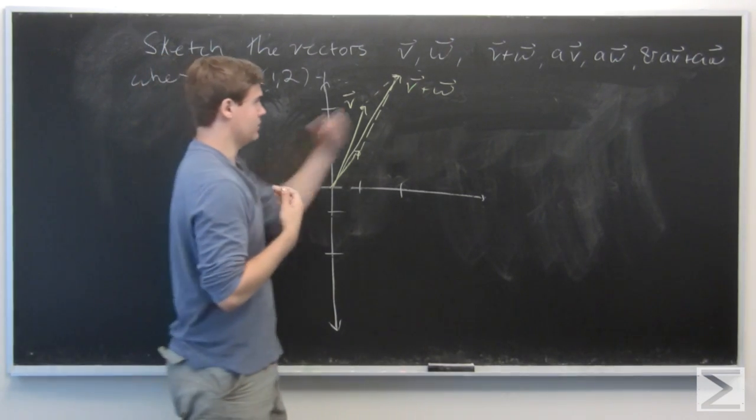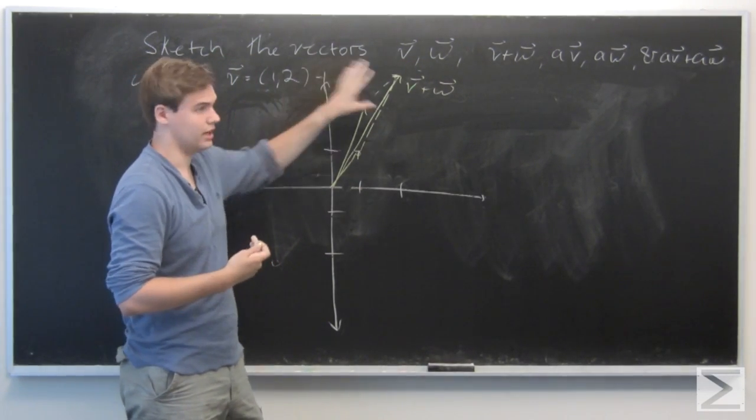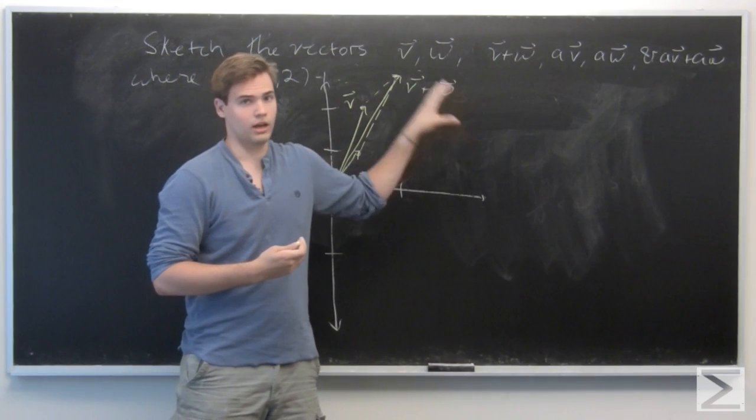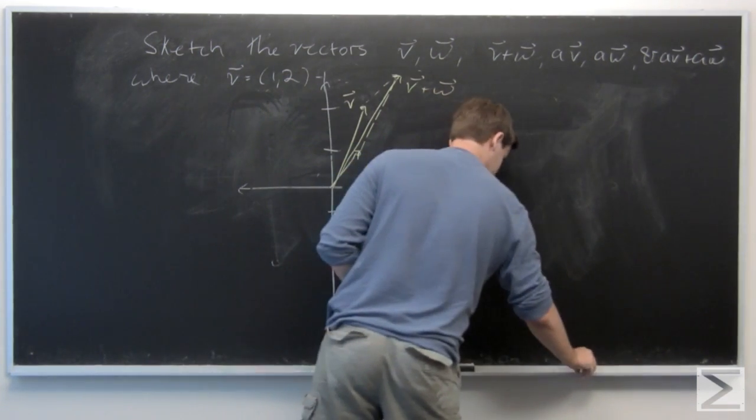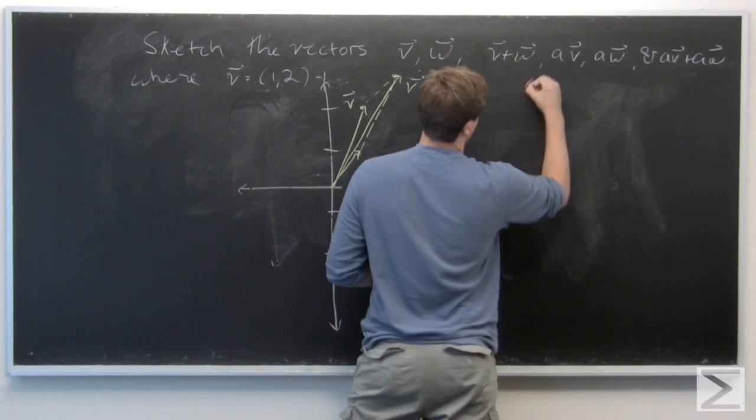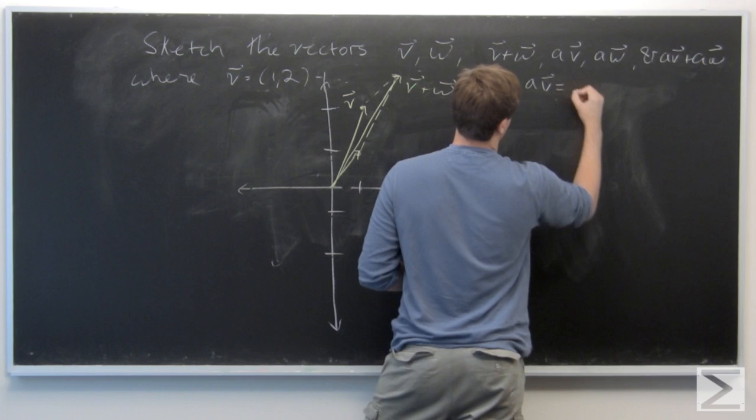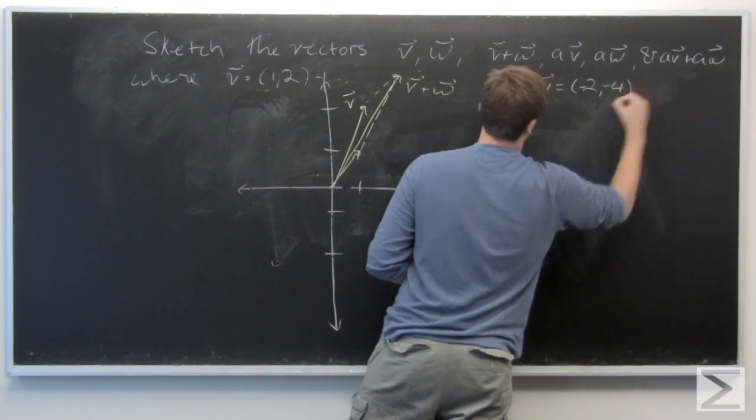And so now we can compute the scalar multiplication of a·v, a·w, and a·v plus a·w. So this is a quick calculation first. So we just have (-2,-4).